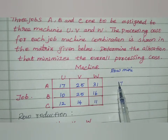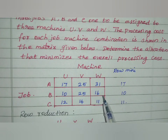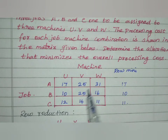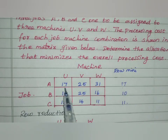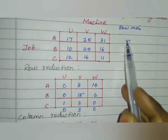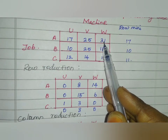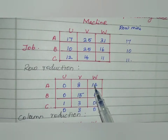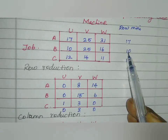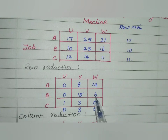It will be easy if we mark it in the box. Now we do row reduction. Row 1: 17 minus 17 = 0, 25 minus 17 = 8, 31 minus 17 = 14. Row 2: 10 minus 10 = 0, 25 minus 10 = 15, 16 minus 10 = 6.